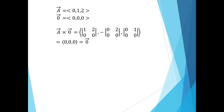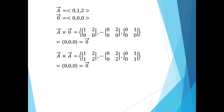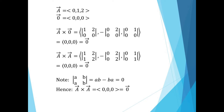Two more quick examples. The first is rather obvious: if we cross a vector with the zero vector, then one row of each determinant will be zero and the result will necessarily be the zero vector. Perhaps not quite as obvious: if we take a vector and cross it with itself, this will give us the same numbers on the top and bottom of our determinant, which will again give us the zero vector. In fact, whenever two rows of a matrix are the same, the determinant is zero. So a cross a equals the zero vector for any vector a.